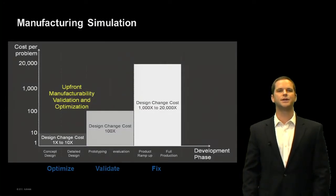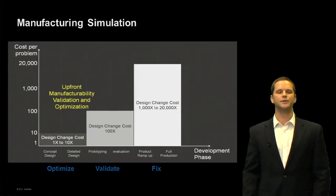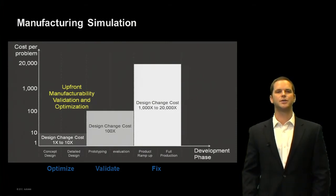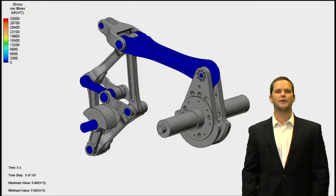Now let's look at some customer use cases and understand why our customers use simulation. On the manufacturing or product design side, it's all about upfront manufacturability. If we look at this bar chart, as we go from left to right, the cost of design changes increases logarithmically. So we want to enable our customers to make design changes upfront and early in the design process when they're the least costly and the most impactful.